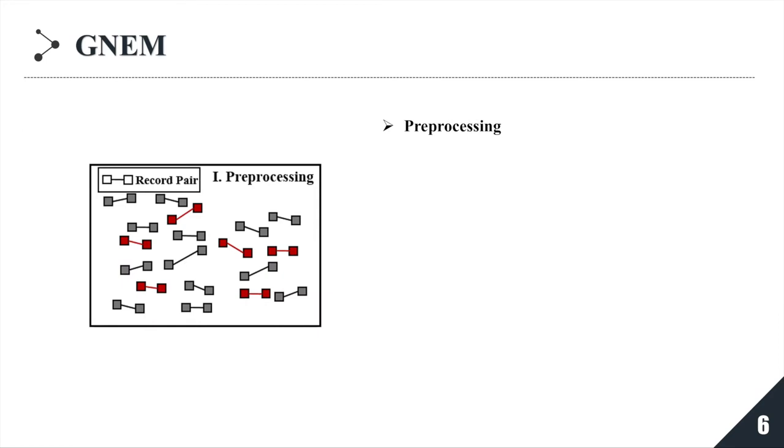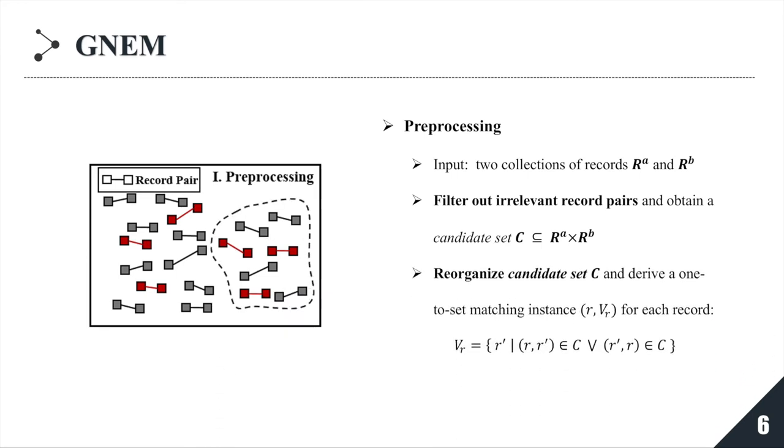Preprocessing module extracts relevant records to augment each record pair and prepares one-to-set matching instance. Given two collections of records, we also resort to blocking mechanism to filter out irrelevant record pairs and obtain a candidate set. Then we reorganize the candidate set and derive a one-to-set matching instance for each record. The matching instance involves all pairs including the corresponding record.